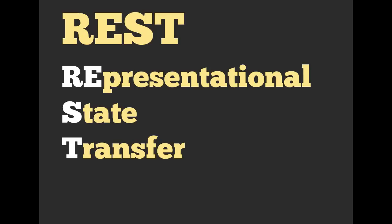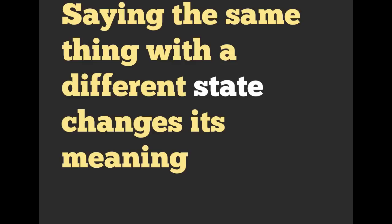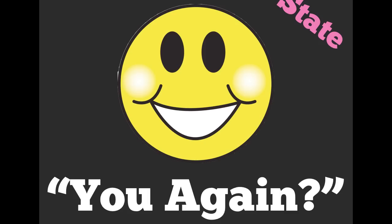Let's take a look at a real-world example. In general, we can say the same thing with a different state and it's going to change its meaning. What exactly do I mean by state? If you were to go up to a friend and say 'you again' with a giant smile on your face, your state is happy. You're in a happy mood, you're probably going to say that with a different tone. Even though the message is just 'you again,' it is pretty clear that this is a very good, happy message.